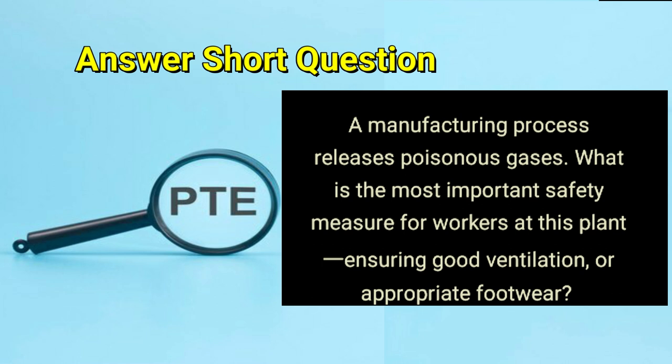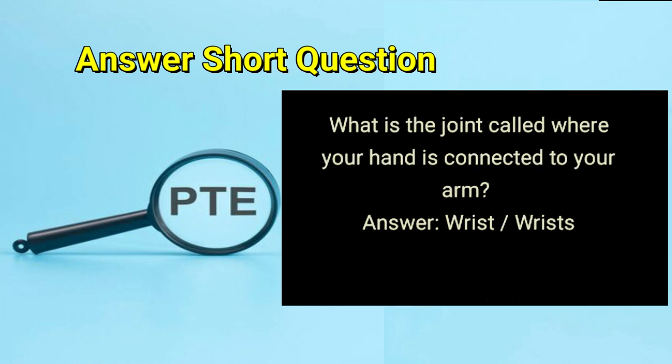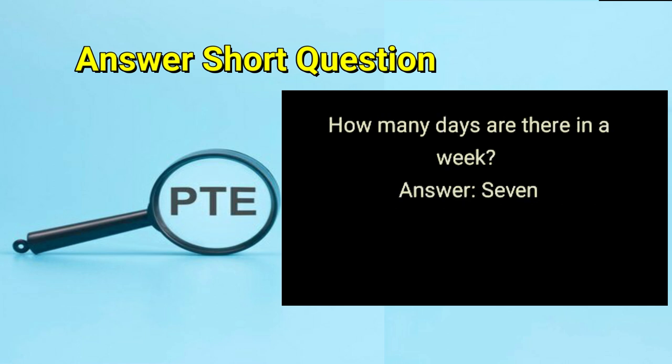What is the joint called where your hand is connected to your arm? Answer: wrist or wrists. How many days are there in a week? Answer: seven.